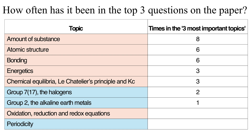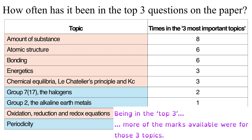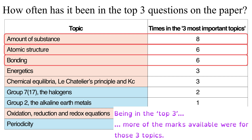Some topics are worth more than others on a particular paper, so I've decided to look at which topics are in the big three each year — meaning those three topics had more marks available than any of the other topics. Amount of substance is consistently in the big three, and eight times out of nine it was worth the most marks on a paper. Six times out of the nine papers, atomic structure and bonding made up the rest of the top three. There is quite a gap to fourth place, which is energetics and equilibria, tied for three times in the top three across those nine years.